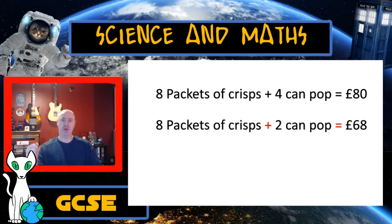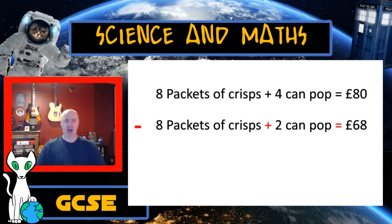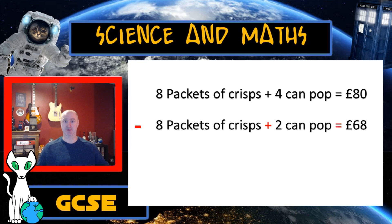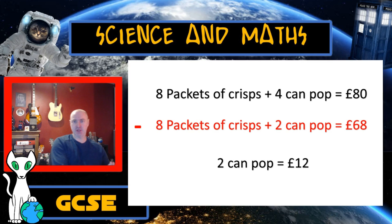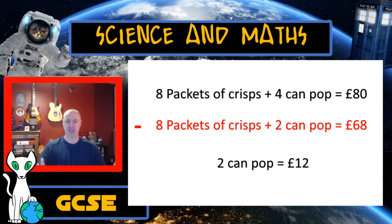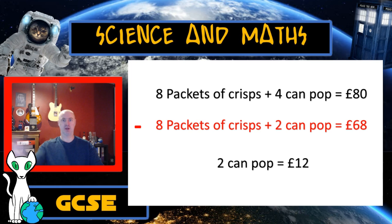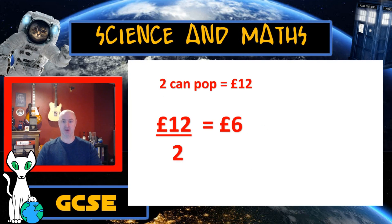Now I can subtract the bottom equation from the top equation. Eight packets of crisps minus eight packets of crisps gives me no packets of crisps. Four cans of pop minus two cans of pop gives me two cans of pop. And on the other side of the equals sign, £80 minus £68 gives me £12. By multiplying one of the equations and then subtracting it from the first equation, I've now simplified this into that very easy equation we had at the beginning of the video. Now I know two cans of pop equals £12.